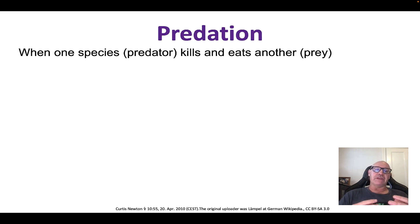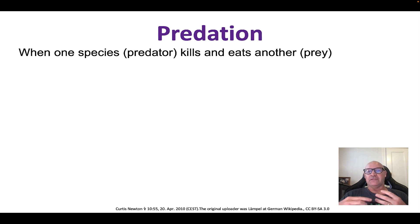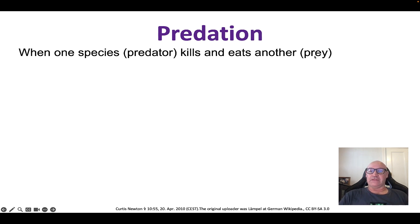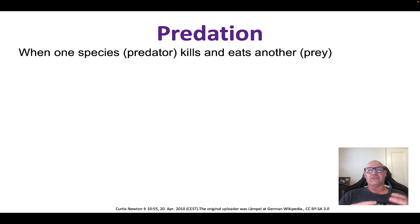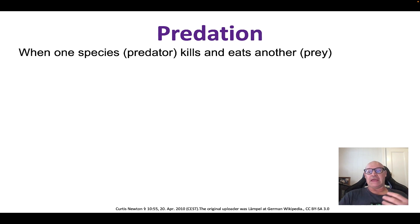The first interaction is predation. Quite simply, this is when one species — the predator — kills and eats another species — the prey. The predator benefits and the prey is negatively affected and killed. What's really important in terms of ecosystems is that this species interaction between a predator and prey can influence the population of both.